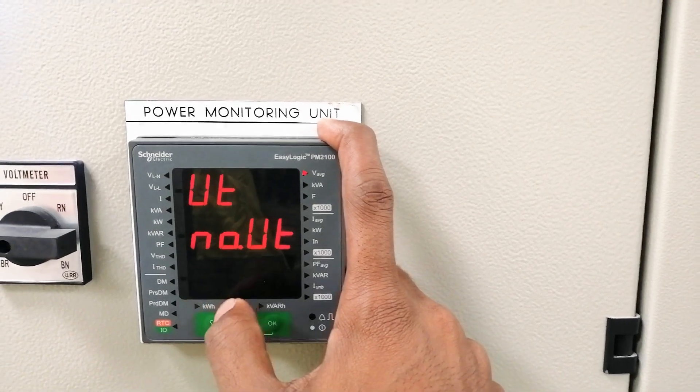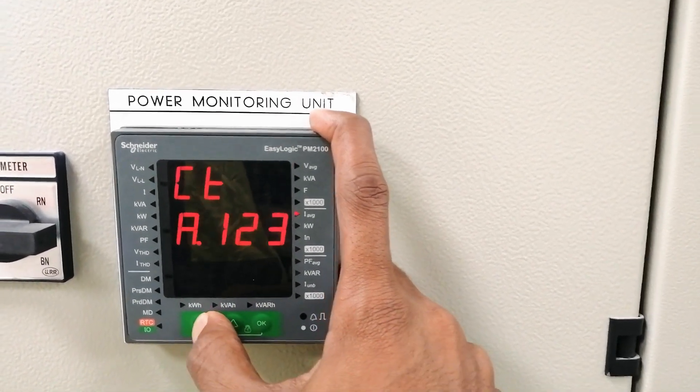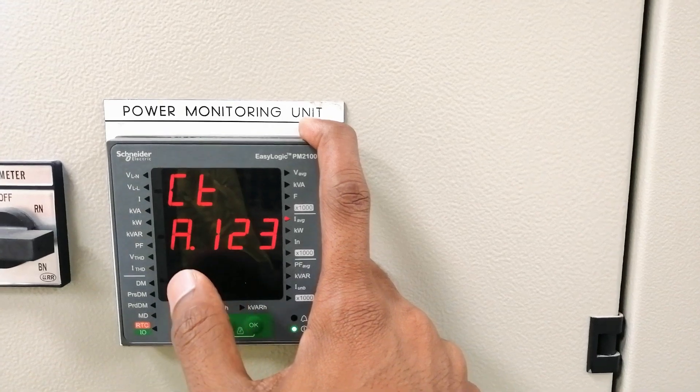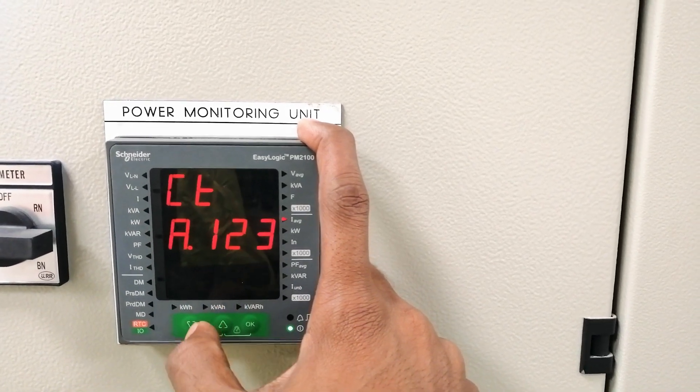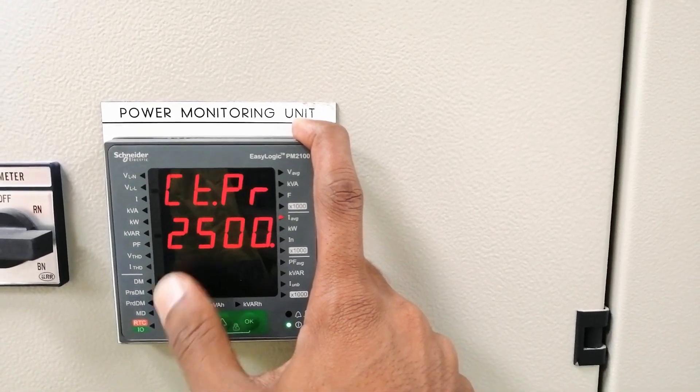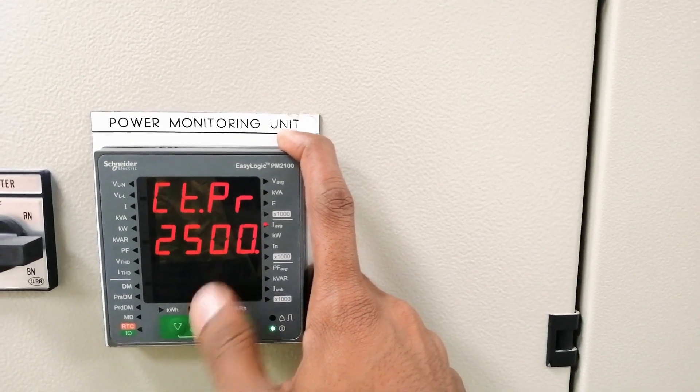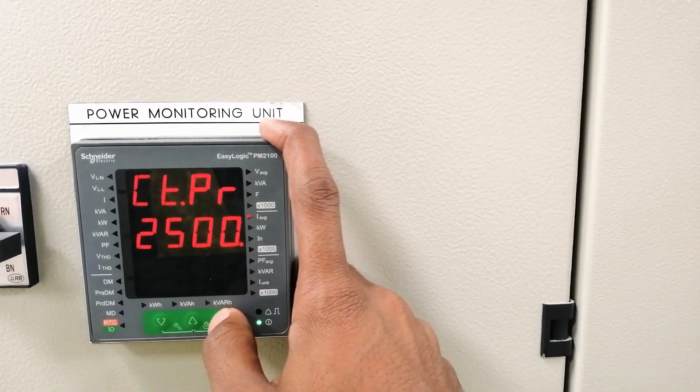Next is VT. We are going to have VT, then CT Ampere 1-2-3 as seconds. Next is CT primary is 2500.